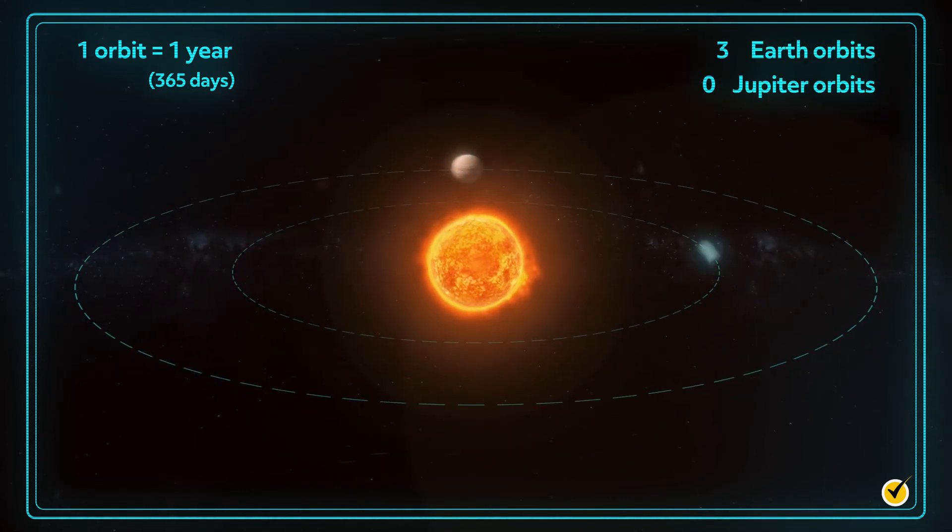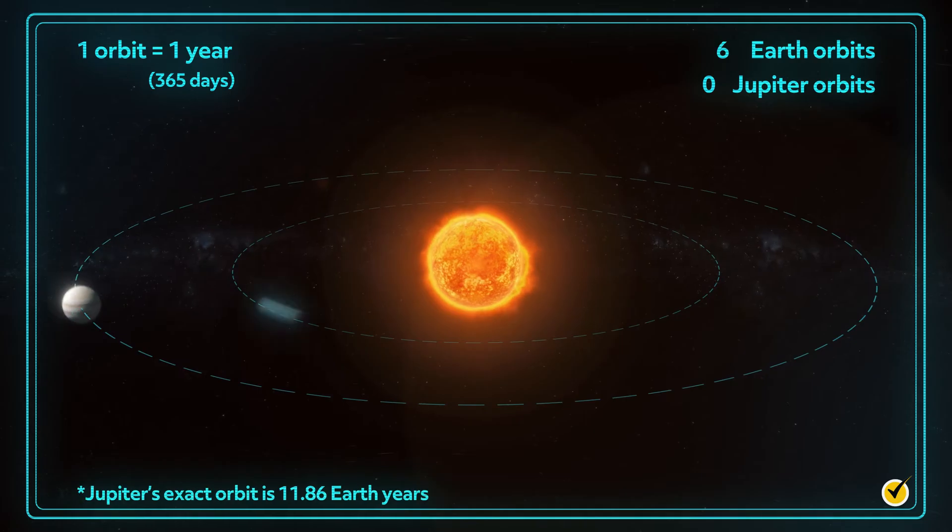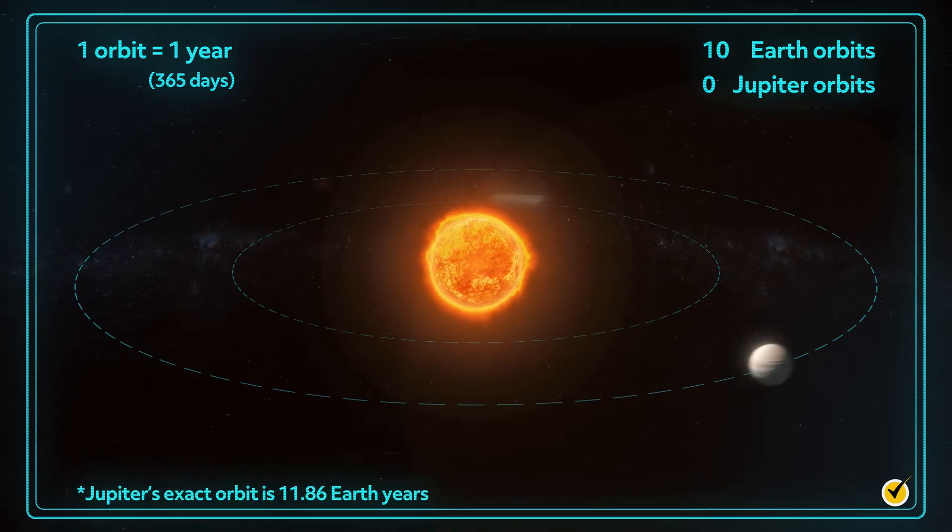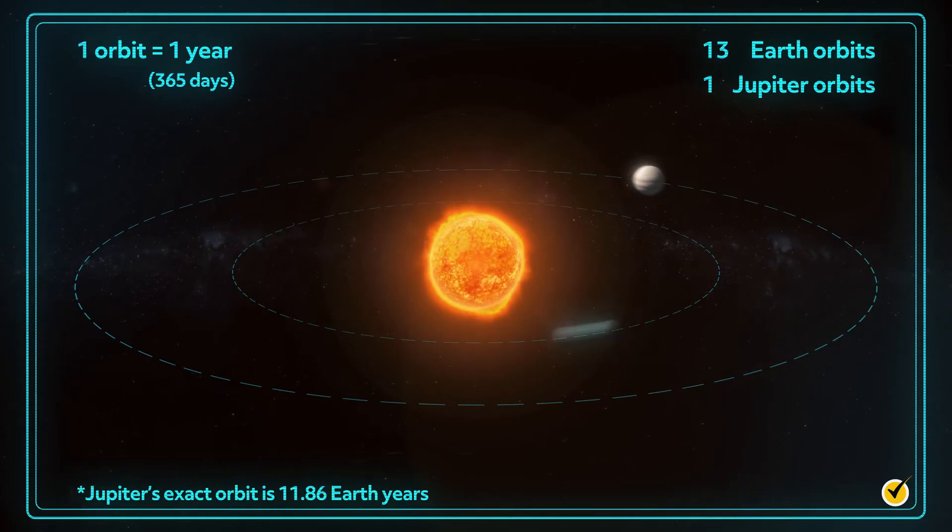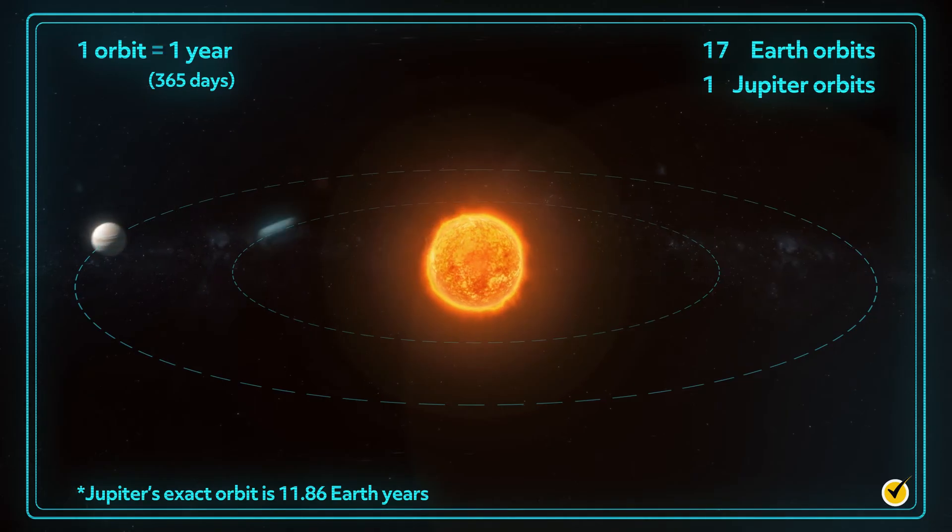Jupiter's orbit, for comparison, takes 12 Earth years. Jupiter is a lot further from the Sun than we are, so as you can imagine, it has a longer distance to travel.